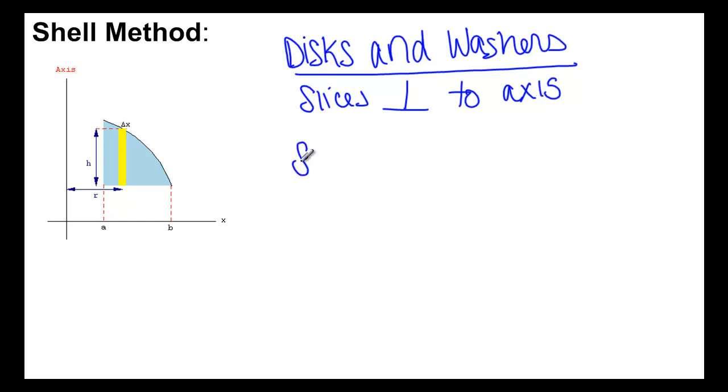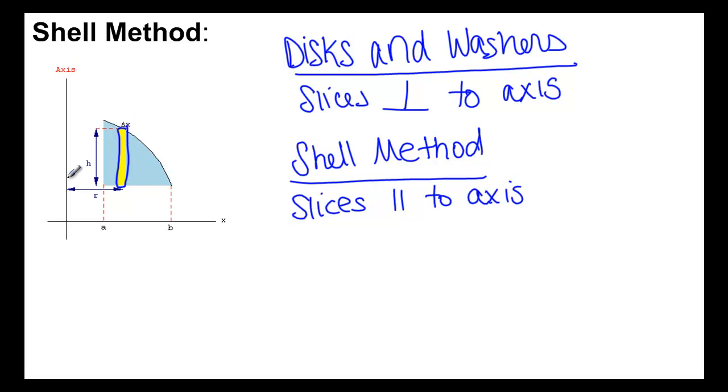We're going to do something called the shell method. So with the shell method, you're going to take a slice that's parallel to your axis, and you're going to look at what happens when you revolve that slice around.